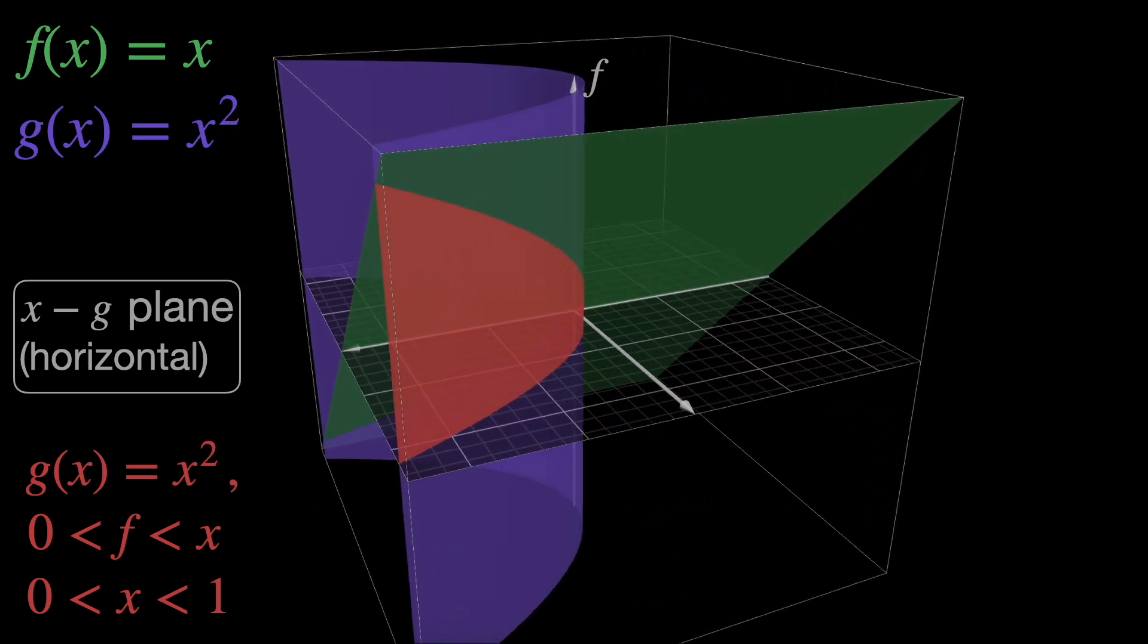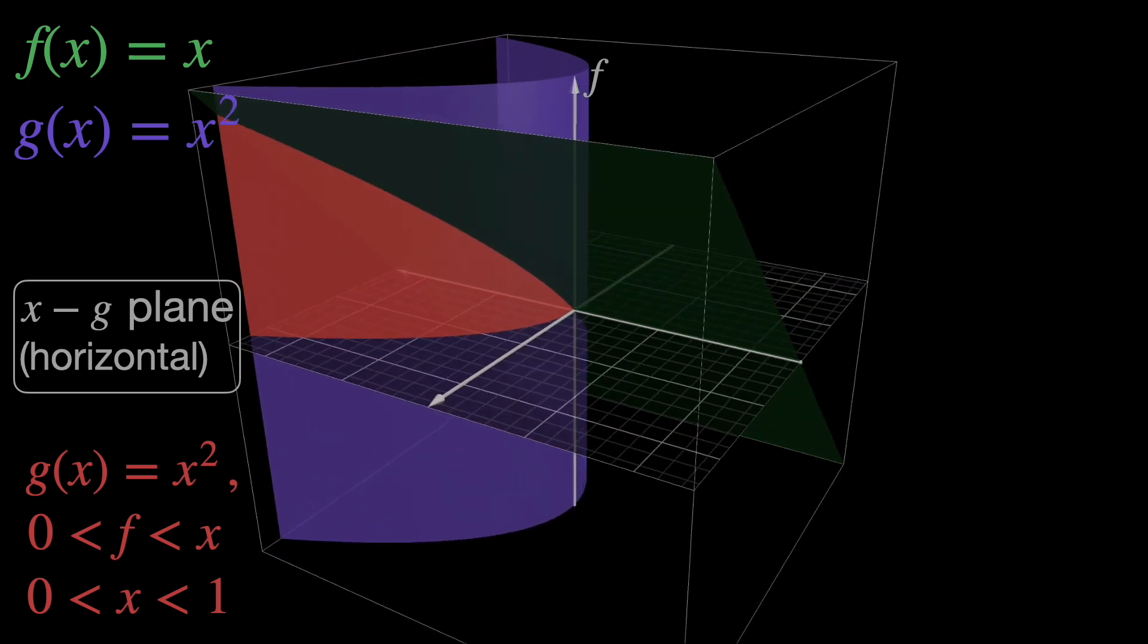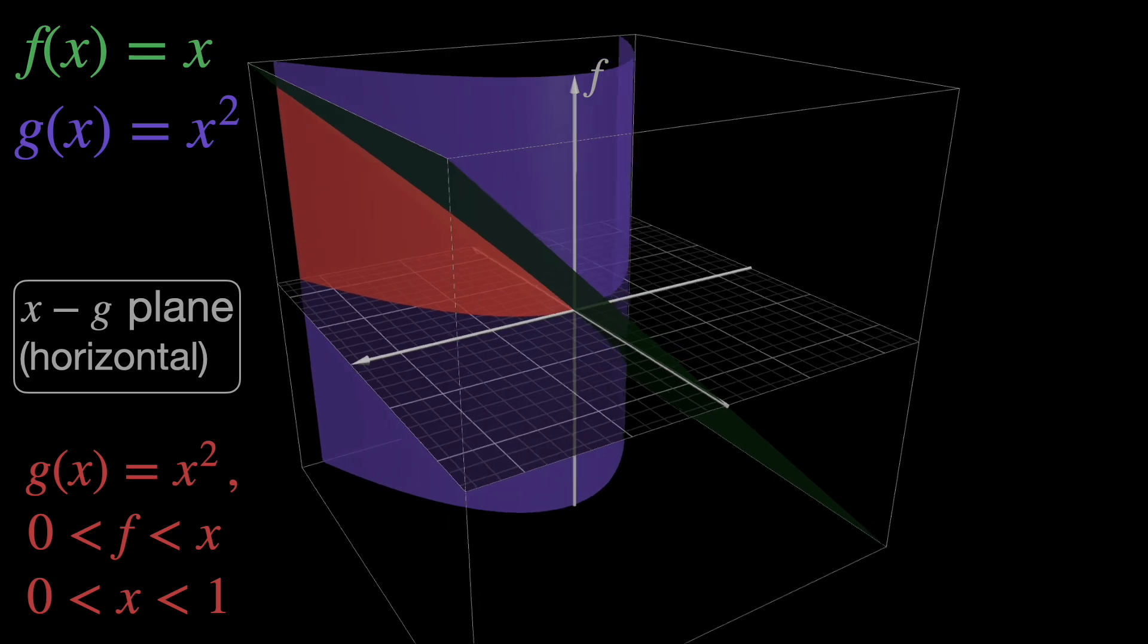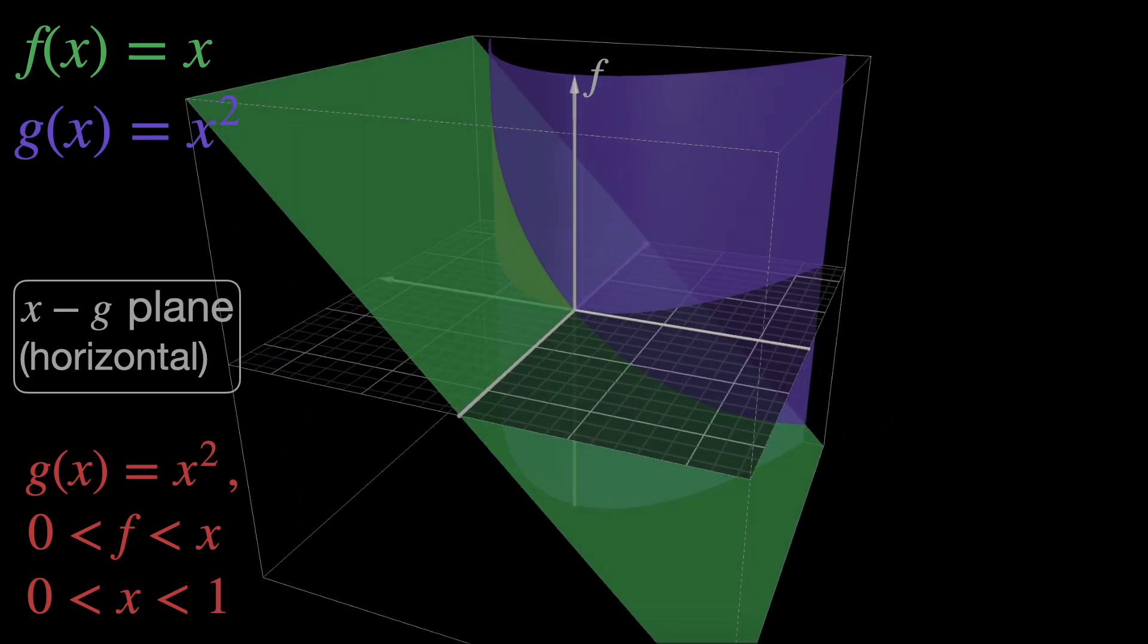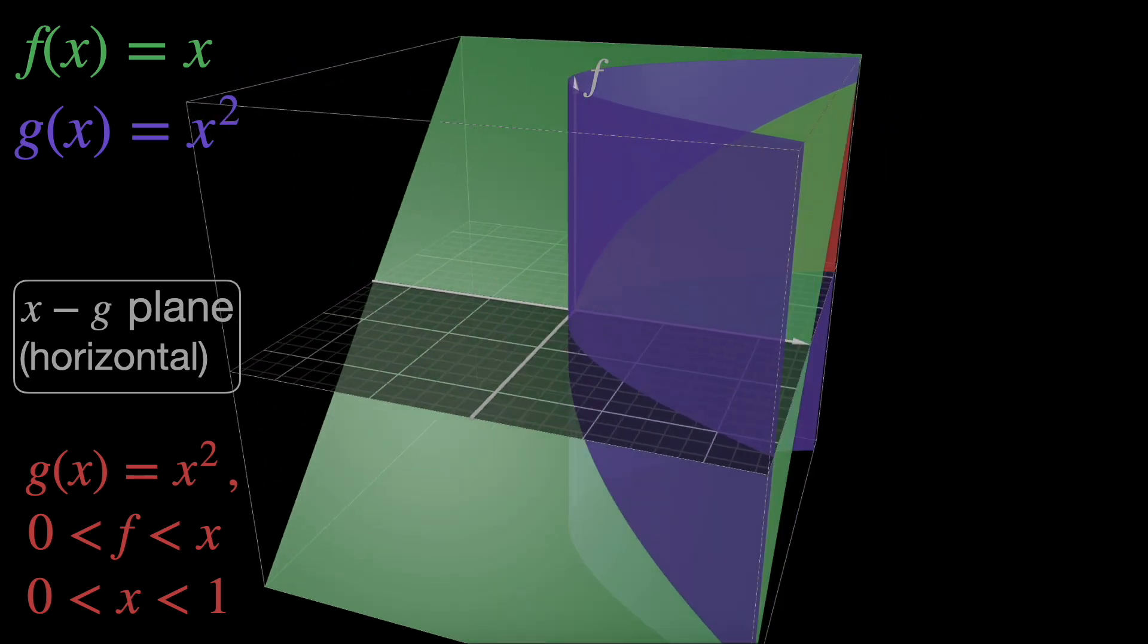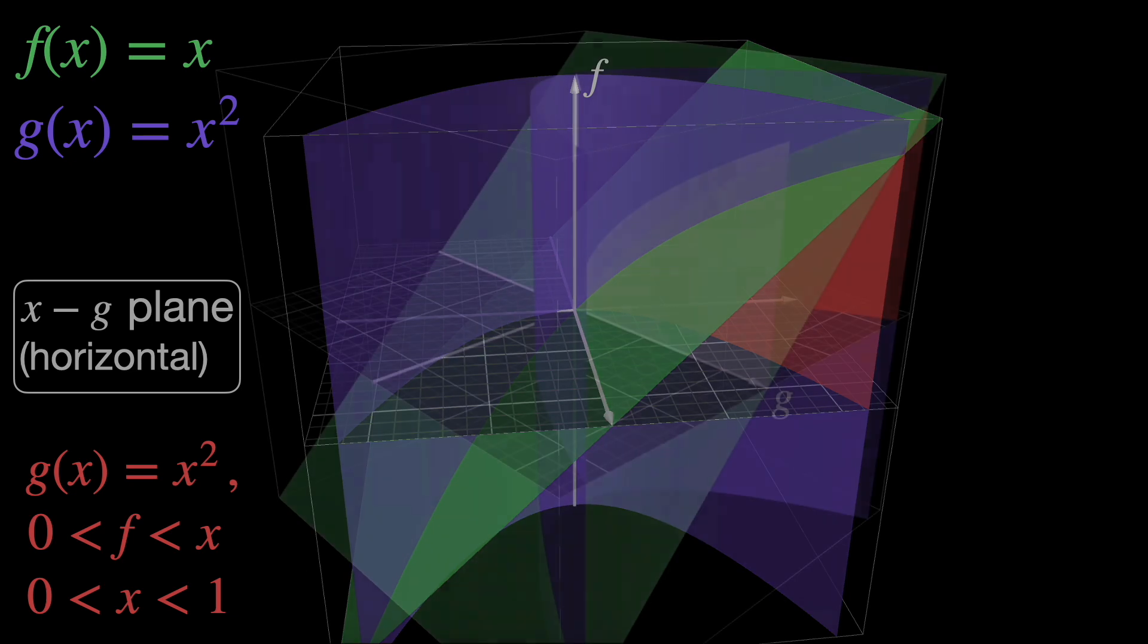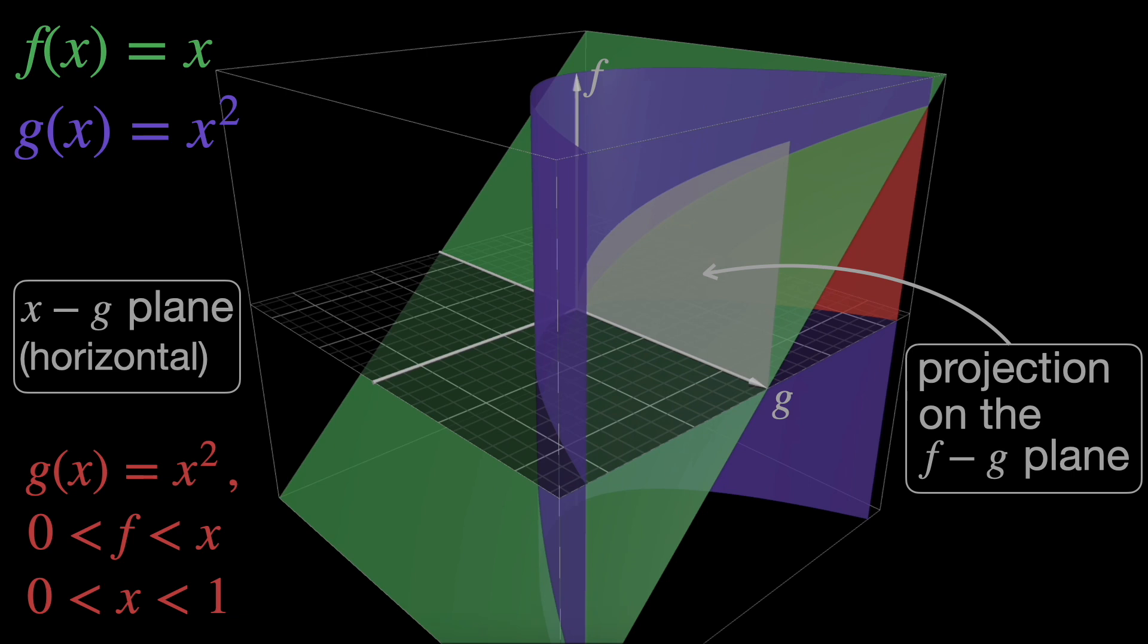This orange surface is the so-called fence, in the analogy that we will see shortly. It is important that you have a very good visual understanding of how we define this fence, because the area of one of its shadows will be the result of the Riemann-Stieltjes integral. So, this is the fence's projection on the f,g plane. In other words, that's the shadow that will give us the result of the Riemann-Stieltjes integral. Try to understand how this projection was made before moving on.